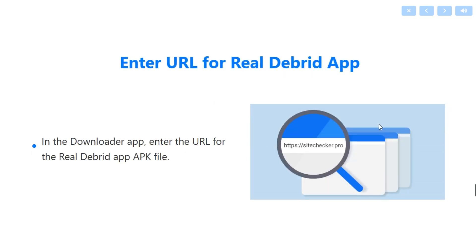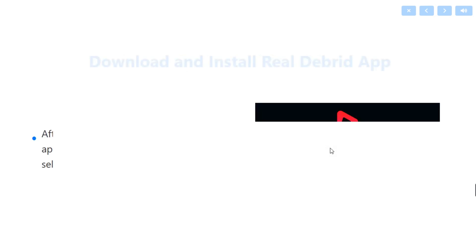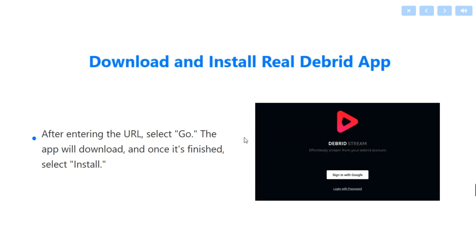Once installed, open the Downloader app. In the Downloader app, enter the URL for the Real Debrid APK file. After entering the URL, select Go and the app will download. Once it has finished, select Install.